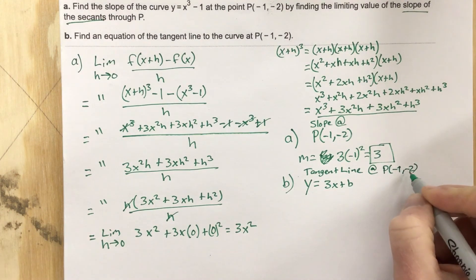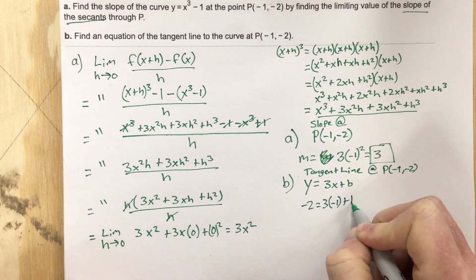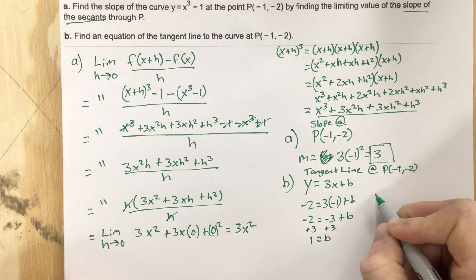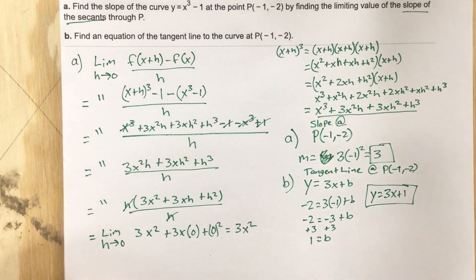So let's plug that in. We get negative 2 equals 3 times negative 1 plus b. Negative 2 equals negative 3 plus b. Add the 3 over. We get 1 equals b. So the equation is y equals 3x plus 1. And this is the tangent line.